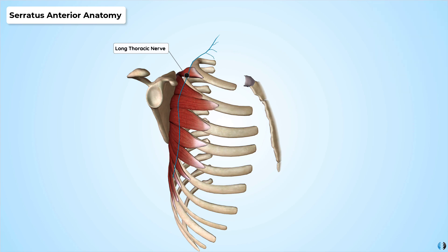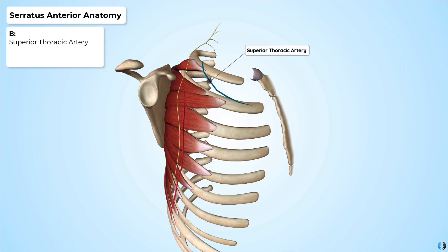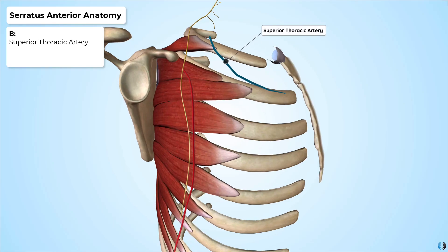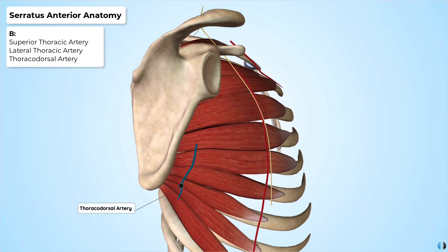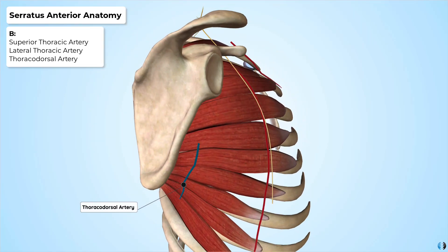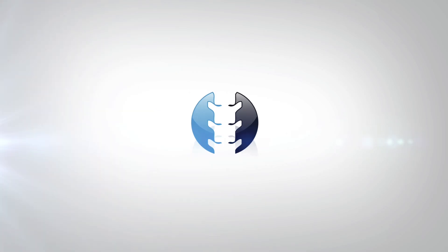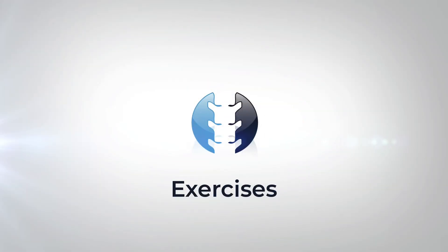The blood supply for this muscle comes from the superior thoracic artery, the lateral thoracic artery, and branches from the thoracodorsal artery. That covers the anatomy — next let's talk about exercises.